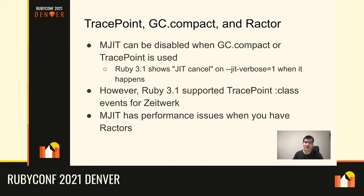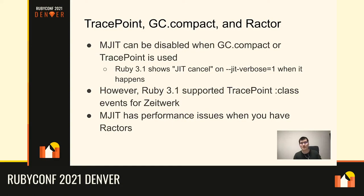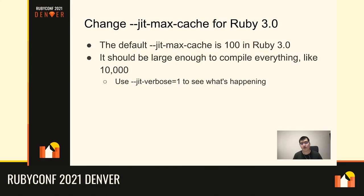MJIT also has some performance issues when you use Fiber. We're still investigating, but when you enable Fiber, the Ruby interpreter switches to multi-Fiber mode, which is slower. More significantly, enabling Fiber causes the code generated by MJIT to be significantly slower. We're working on that issue, but for now you may not see peak performance when testing with Fibers.